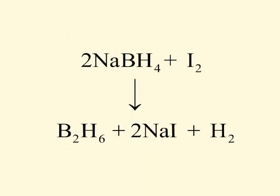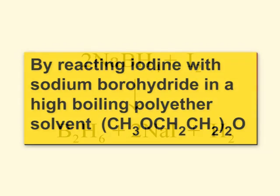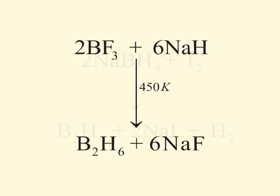The third method of preparation of diborane is by reacting iodine with sodium borohydride in a high boiling polyether solvent. Sodium borohydride and iodine react to form diborane, sodium iodide, and hydrogen. On industrial scale, boron trifluoride and sodium hydride react to produce diborane. The reaction occurs at 405 Kelvin temperature, and sodium fluoride is obtained as a by-product.